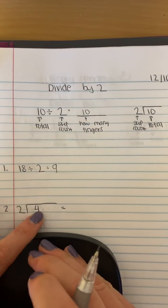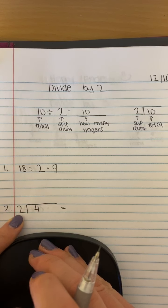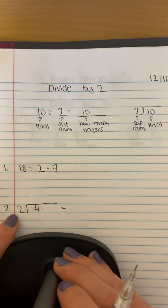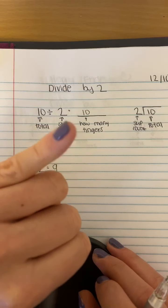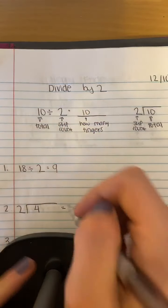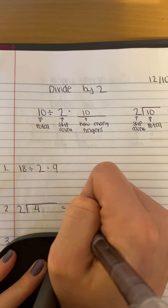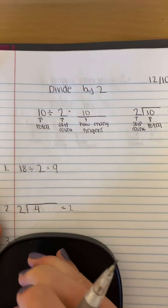And then I look down here. I know this is my total, this is what I'm skip counting by, so I'm going to skip count by twos until I reach to four and then see how many fingers I have. Two, four. So my answer is two. Four divided by two is two.